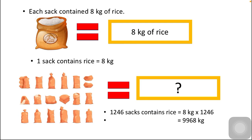The next statement is each sack contains 8 kg of rice — meaning one sack can pack 8 kg of rice. So how many kg are in 1246 sacks? We need to find that first. So: 1246 sacks of rice contain rice equals 8 kg multiplied by 1246. The answer we get is 9968 kg.